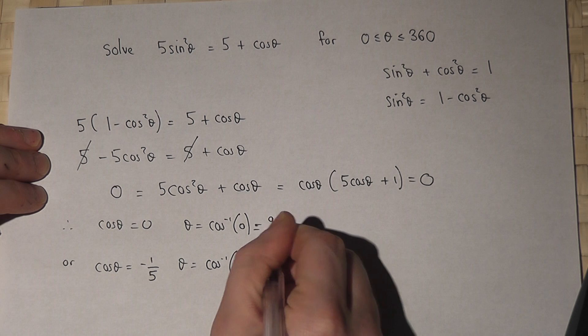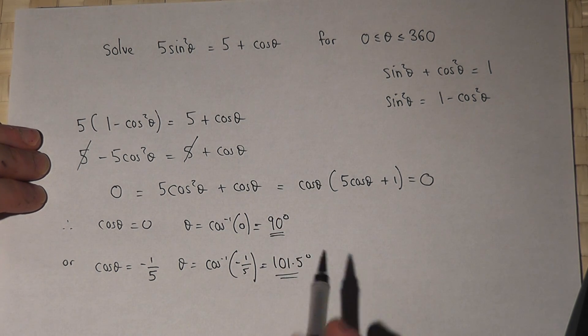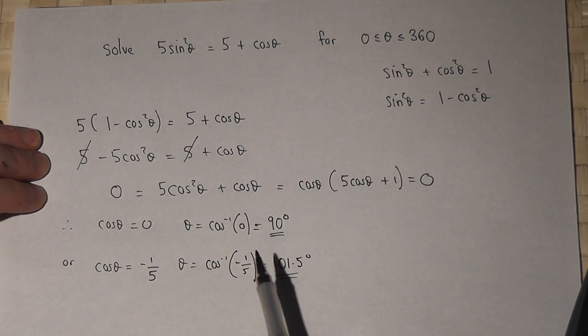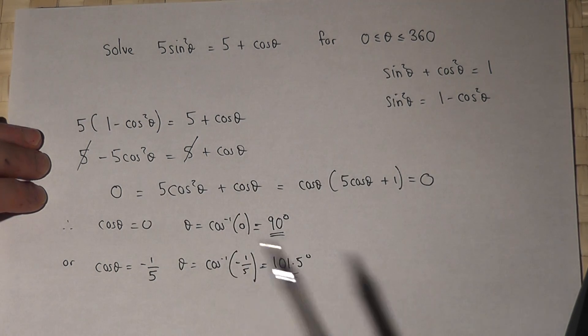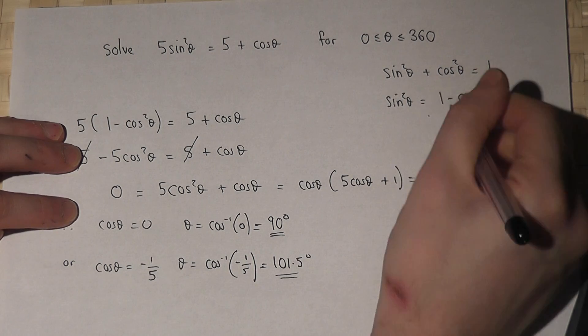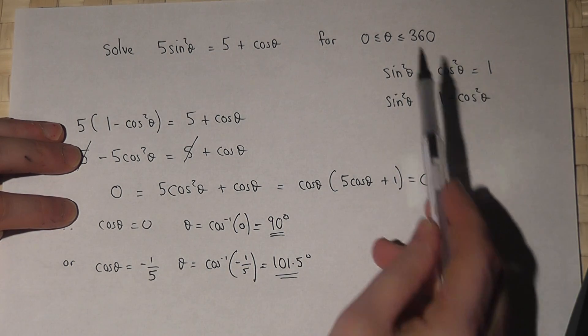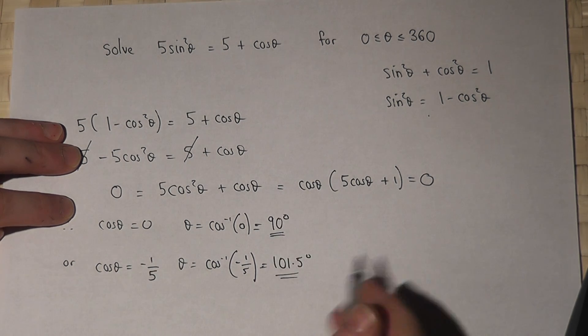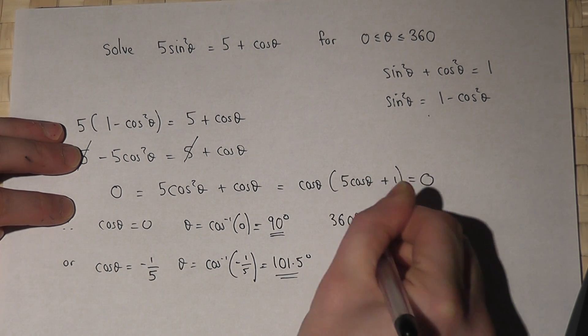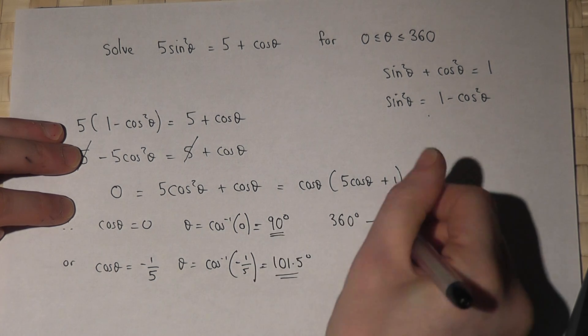However, they are not the only solutions. The question asks for all the solutions between 0 and 360. The cosine graph repeats itself more than once in this interval. And the rule for cosine, to find another solution, is to do 360 degrees minus this key value.